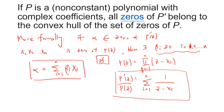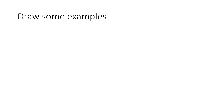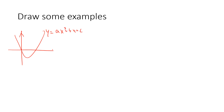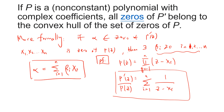Let's draw some examples. One elementary example is the quadratic function: y = az² + bz + c. You can see that the zero of the derivative always lies between the zeros of the polynomial. So basically the zeros of P' are constrained by the zeros of P.